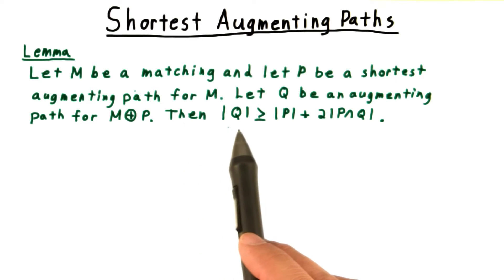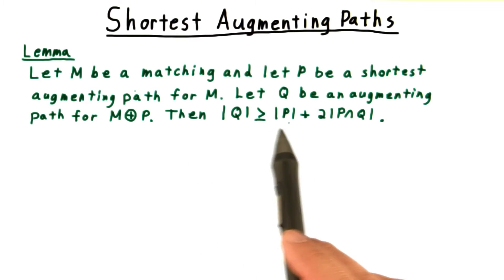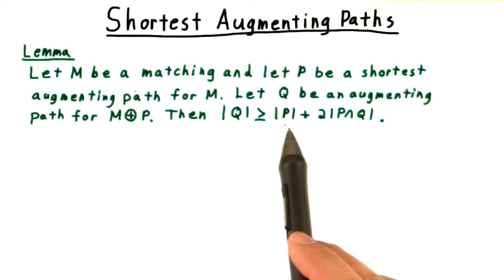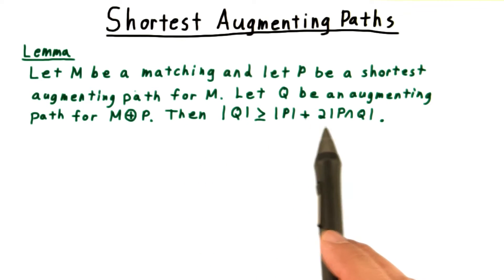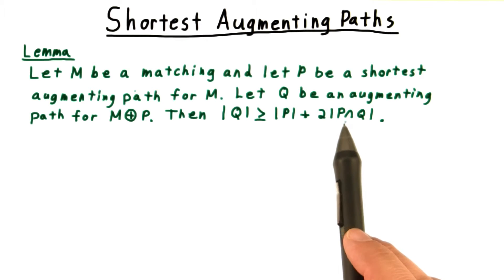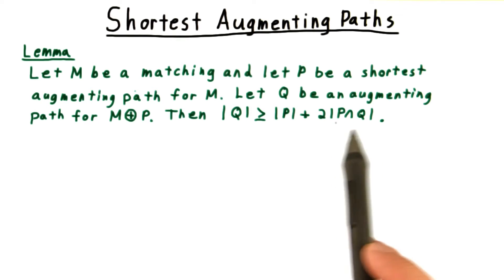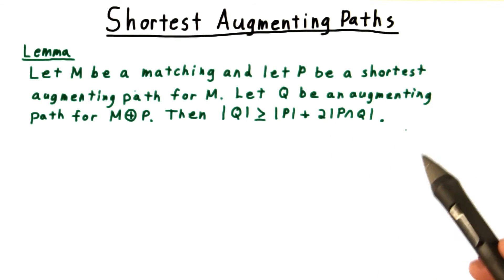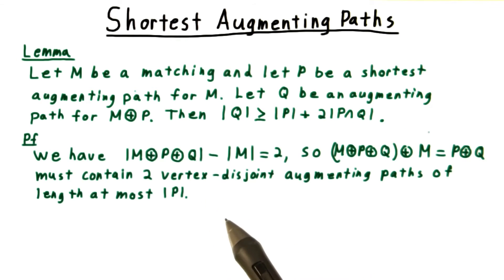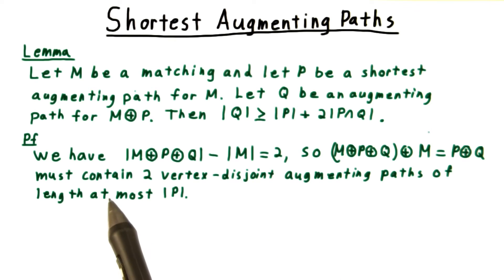Then the size of q is at least the size of p plus twice the overlap between p and q in terms of the number of edges. For the proof,